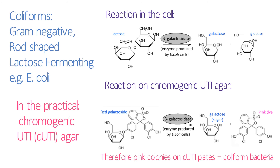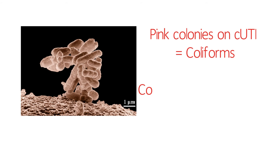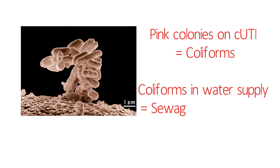This is going to be really useful for our contaminated water supply. Coliforms are abundant in the faeces of warm-blooded animals, so if we find any pink colonies on our plates, we know that there are coliforms and therefore there's likely to be sewage contamination of that water supply.